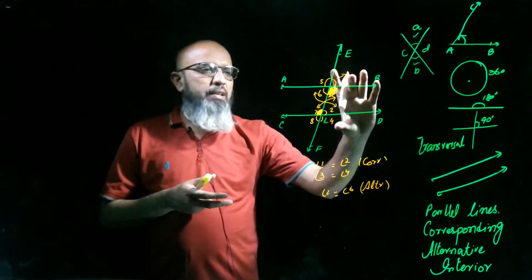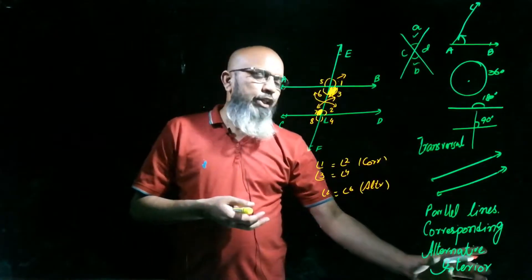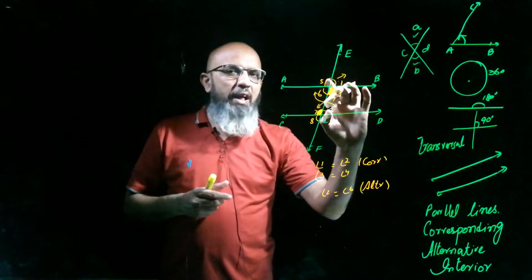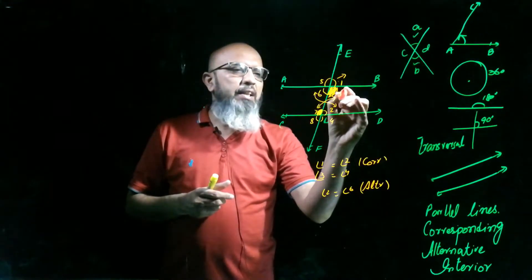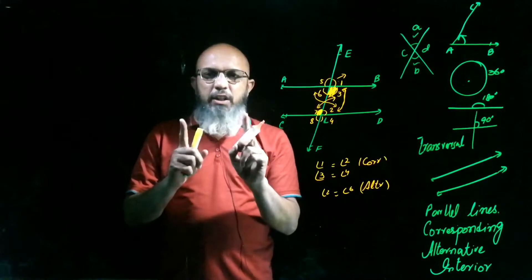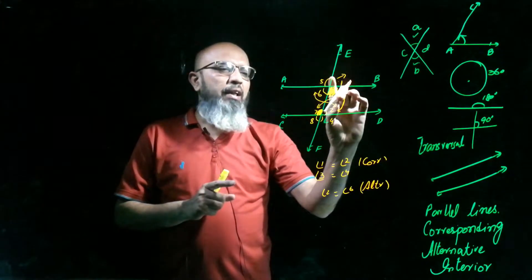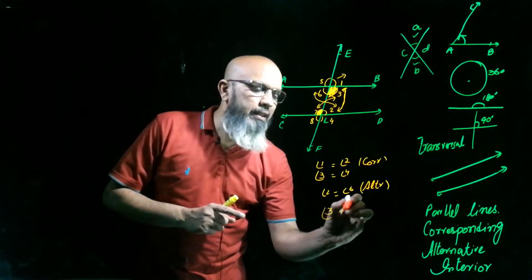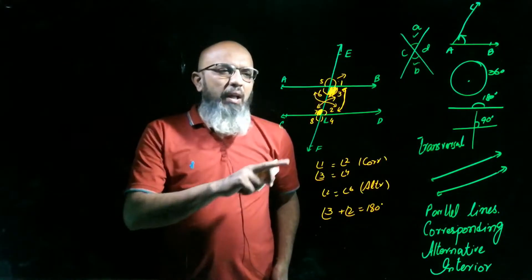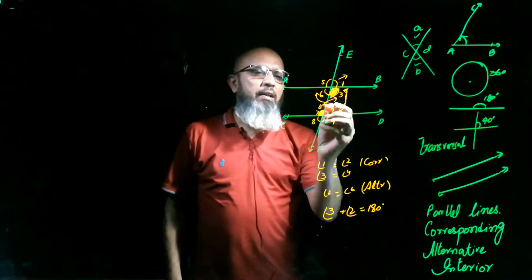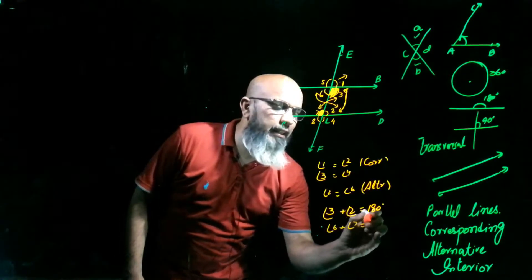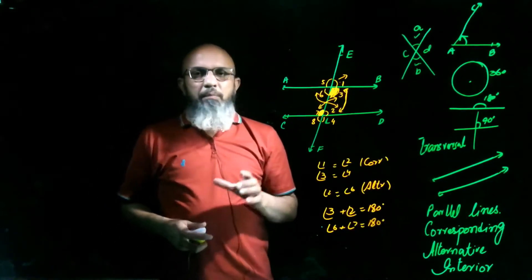The third type is interior angles. Interior angles are inner angles on the same side of the transversal. These two angles are interior angles, and the sum of interior angles always equals 180 degrees. So angle 3 plus angle 2 equals 180 degrees. Similarly on the other side, angle 6 plus angle 7 also equals 180 degrees.